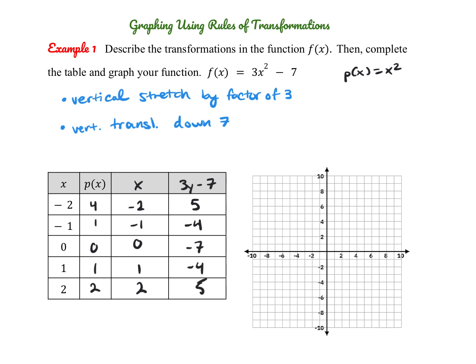So here I would do 3 times 4, which is 12 minus 7, giving 5. Then 3 times 1 minus 7, which is negative 4. Then 3 times 0 minus 7, giving negative 7. And then those same values mirror on the other side. So we plot our points: (-2, 5), (-1, -4), (0, -7), (1, -4), and (2, 5). It's a pretty narrow graph because of that vertical stretch, and you can see it's been shifted down 7.